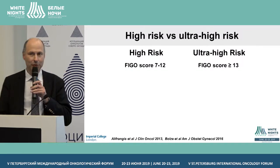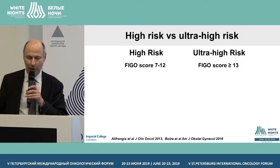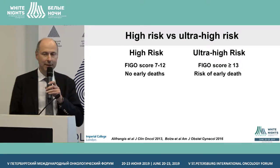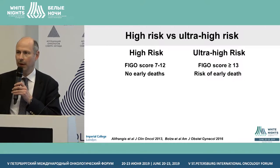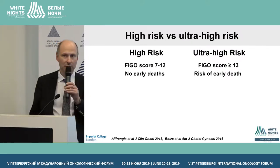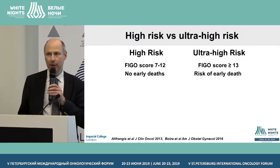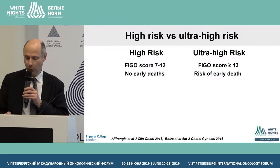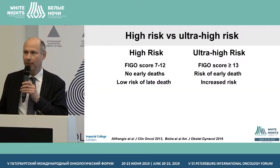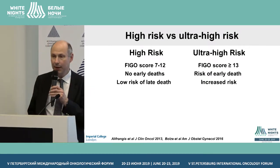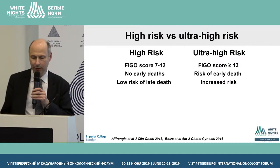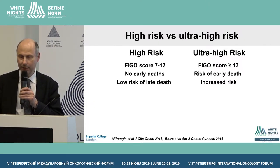What do I mean by ultra-high-risk? What's the difference between ordinary high-risk and ultra-high-risk other than the scoring difference? Regular high-risk disease patients, when you start chemotherapy, don't appear to have any risk of dying early within the first four weeks, whereas those scoring 13 or more seem to have an increased risk of dying early within the first four weeks of starting chemotherapy. There's also a difference later on: in ordinary high-risk there's no real risk of late death from multi-drug-resistant disease, whereas in the ultra-high-risk group there is an increased risk of developing drug-resistant disease.